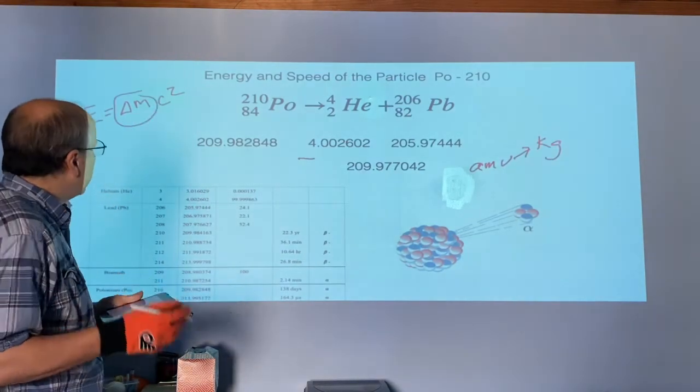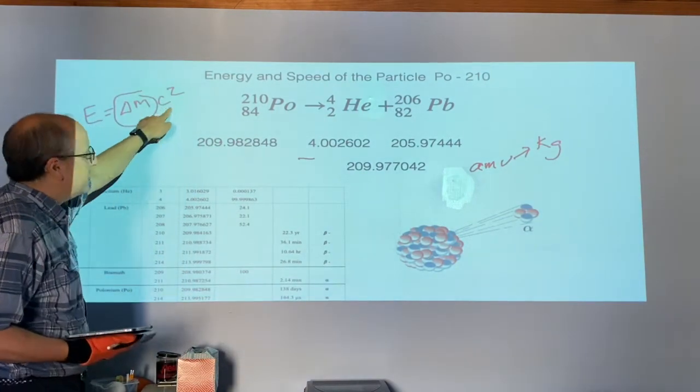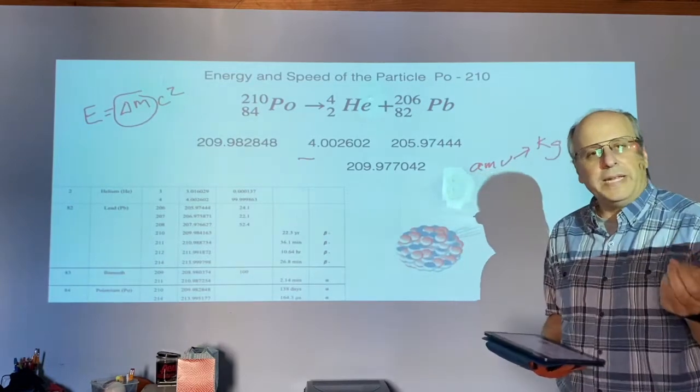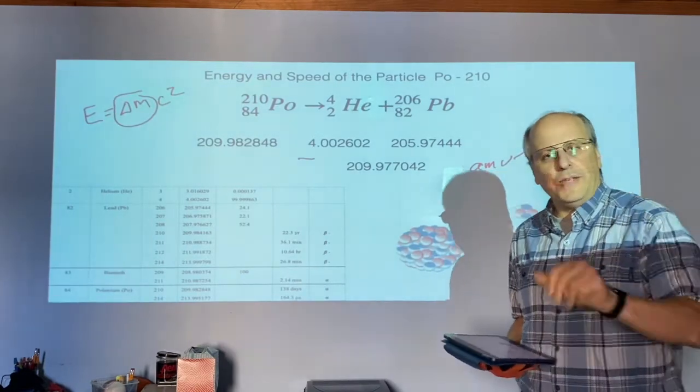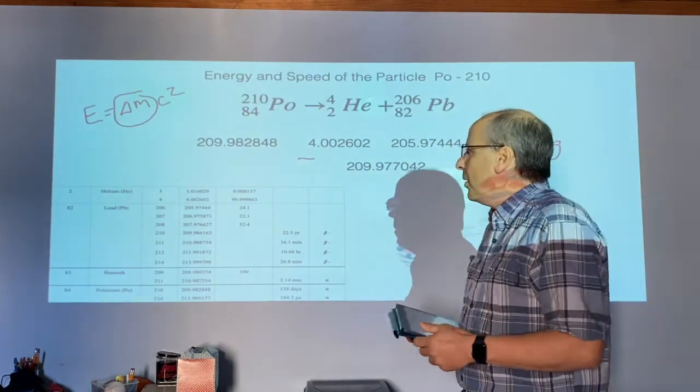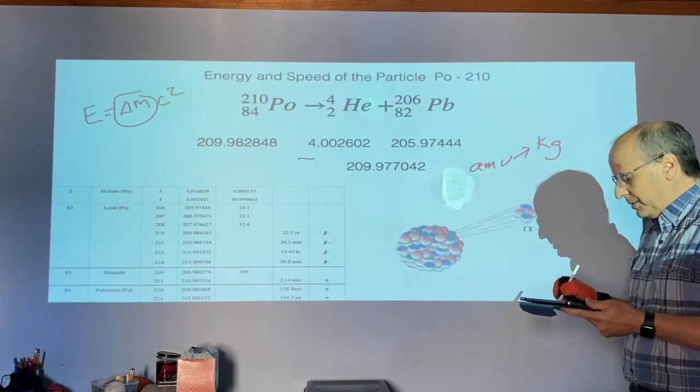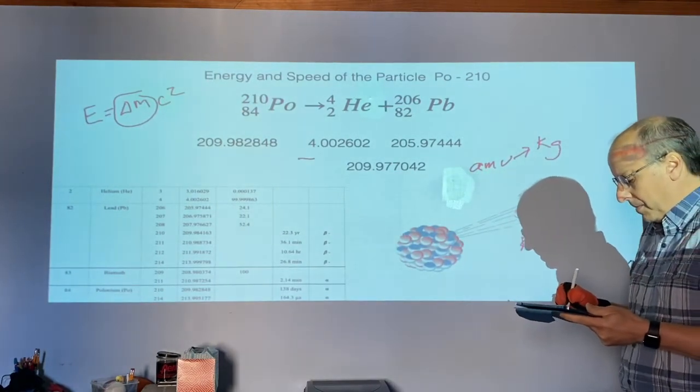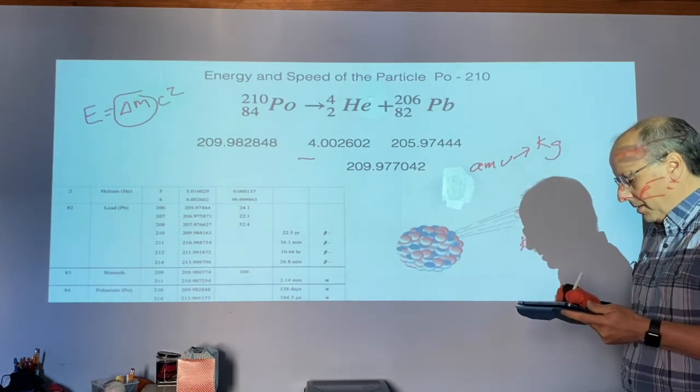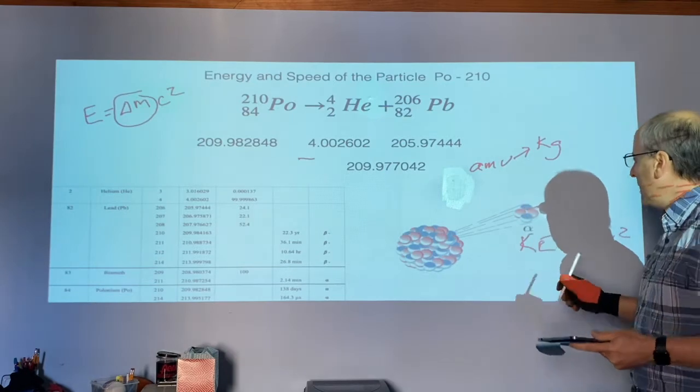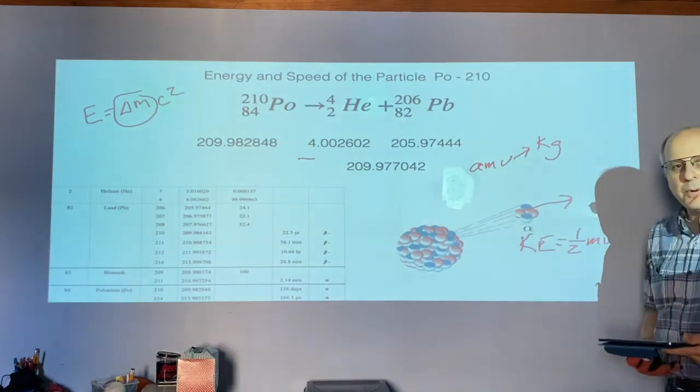And then you put it into your E equals MC squared. When you get your answer, that answer will be in joules. It's okay to leave it in joules now. And then in fact, you want to take that number in joules and use that as the energy of this alpha particle.